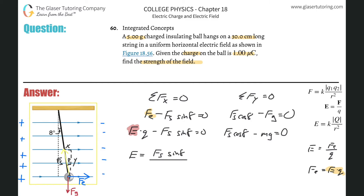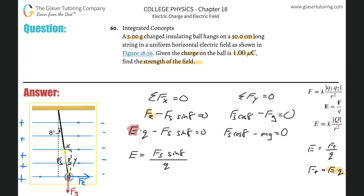We know q — it's one micro coulomb — but we don't yet know F_s, the force of the string. We have two unknowns. To find E, we need to find F_s first. The y-equation contains F_s, so let's solve that for the force of the string: F_s equals mg divided by cosine of 8 degrees.